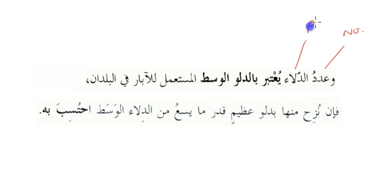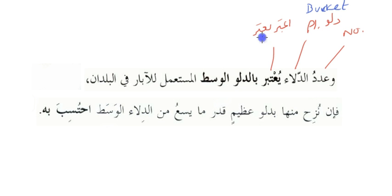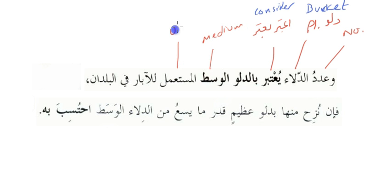عدد means number. دلاع is the plural of دلون which means bucket. يعتبر is from باب يعتبر يعتبر which means to consider, and let's see how it is used as مجهول as well. بالدلوة الوسطة means medium size, المستعمل means used — we've done all this before.